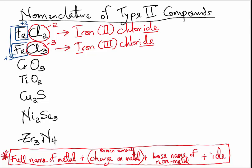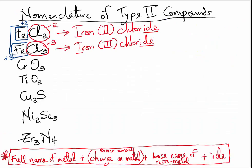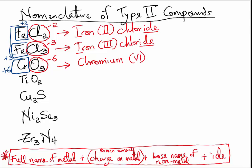Let us take a look at CrO₃. Again, you need to begin from the non-metal. In the periodic table, oxygen is from group 6A, which means it will have a charge of minus 2. We have 3 oxygen atoms here, giving us a total of negative 6. The total positive must be positive 6 to balance. Following the format for naming Type 2 compounds, that gives us the name Chromium(VI) oxide.